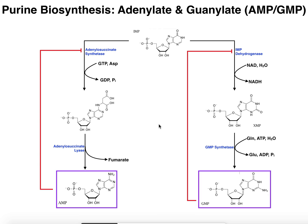There's another means of regulation having to do with the logic of these two pathways. AMP can be processed to ATP by being phosphorylated twice, and GMP can likewise be phosphorylated twice to make GTP. The product GTP is used as a substrate in the synthesis of AMP — GTP is the phosphate source in adenylosuccinate synthetase. Likewise, in GMP synthesis, ATP is a substrate in GMP synthetase. So you need a GTP to make AMP and you need an ATP to make GMP.